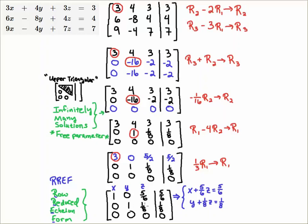Similarly, I have y plus 1/8 z is equal to, this bar is where the equal sign is, 1/8. So I have these two equations.